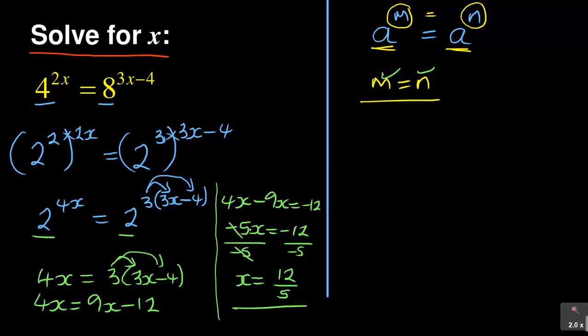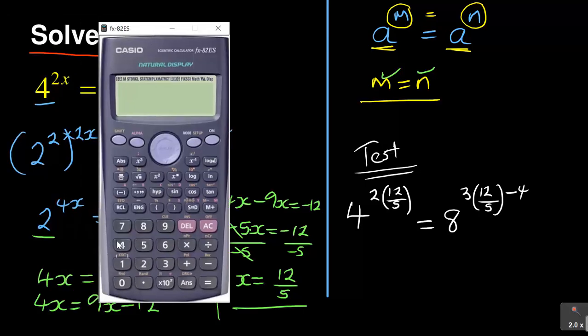But remember, you need to test your answers in this case. Always test them. Any equation, you can test your answers. So how do you test it? Whether it's x, you put that value so that you'll have 4 to the power 2. And our answer of x is 12 over 5. This must be equal to 8 to the power of 3. Whether it's x is 12 over 5 minus 4. So let us test the first one. So we'll have 4 to the power of 2 into 12 over 5. We get the answer there, which is 776.04. Just to round off, 776.047.